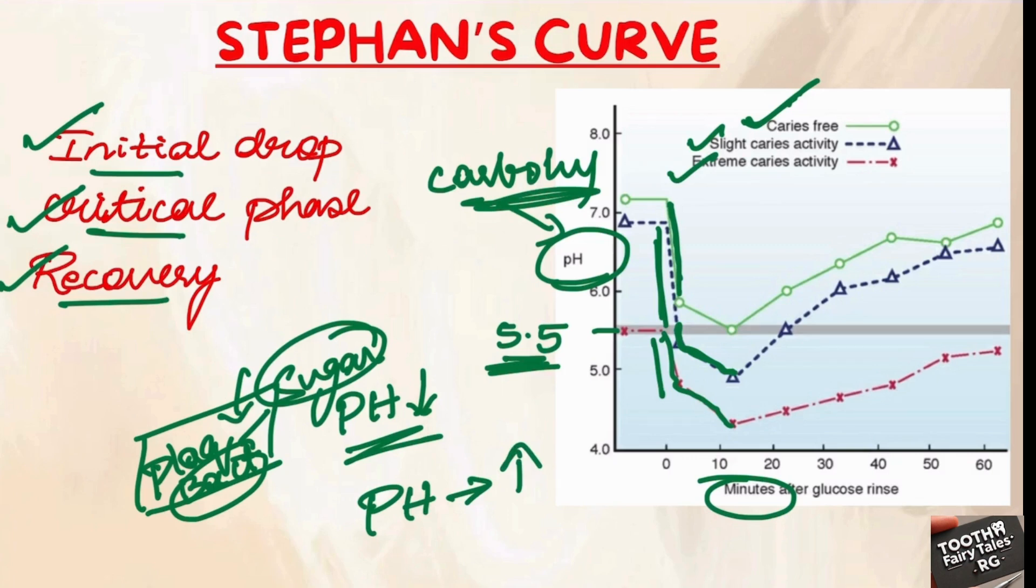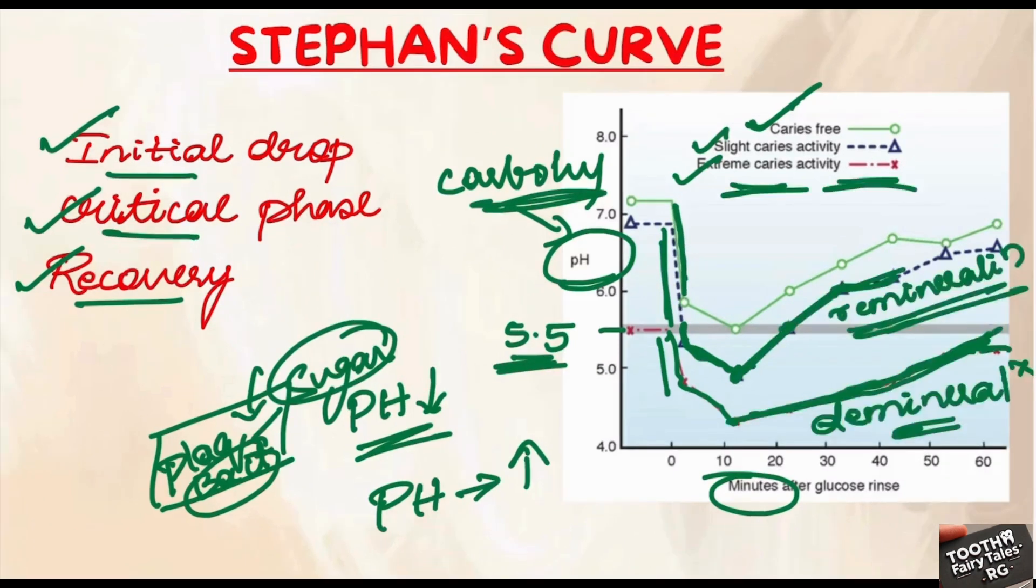This phase is allowing remineralization. The pH has dropped down, but after the sugars are used up by the bacteria, the pH starts to rise again. When the pH starts to rise again, the remineralization process is initiated and the conditions become favorable.